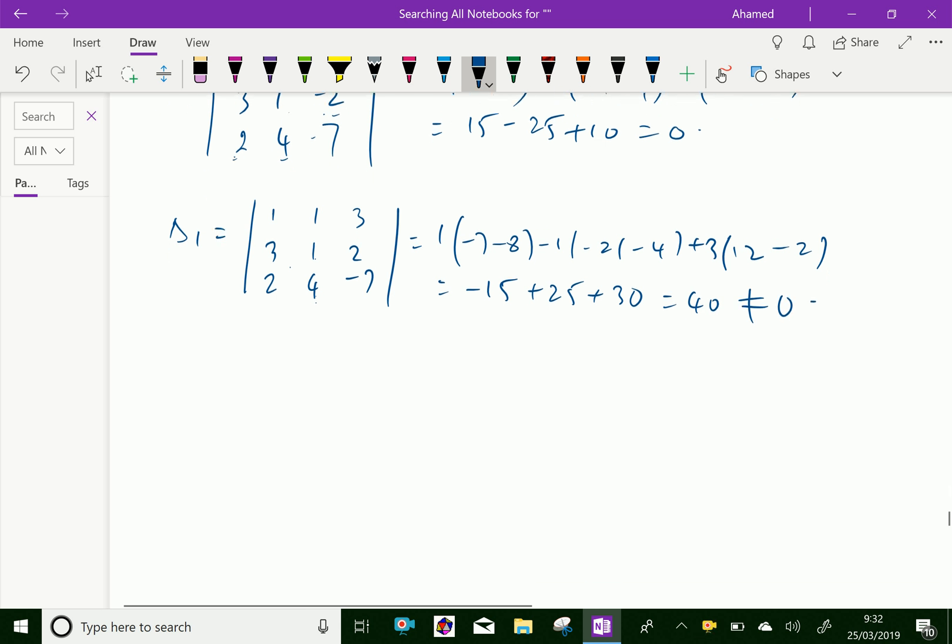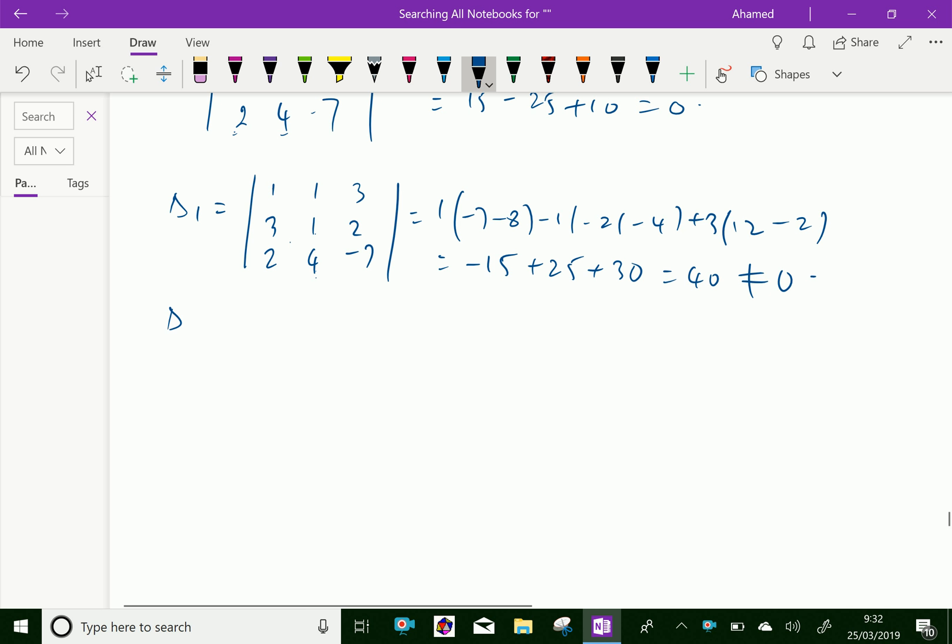So here we can say delta is equal to 0, and at least delta 1 or delta 2 or delta 3 is not equal to 0. So the condition satisfies.